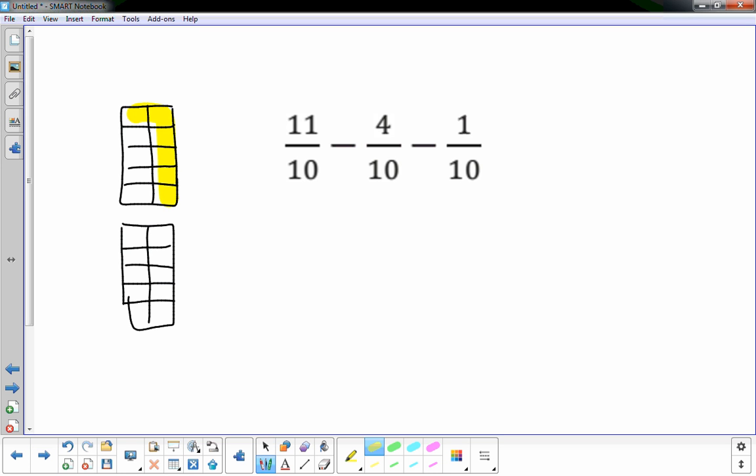And 11/10, that's 11/10. And you're going to take away 4/10: 1, 2, 3, 4. And then take away 1/10. And then whatever's left over: 1, 2, 3, 4, 5, 6. That's your answer, 6/10 is left over. That's kind of the quick visual model for you.